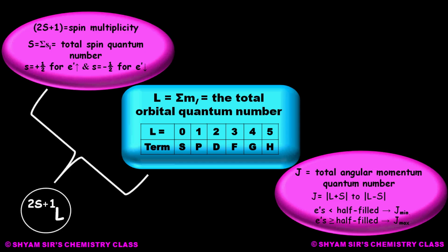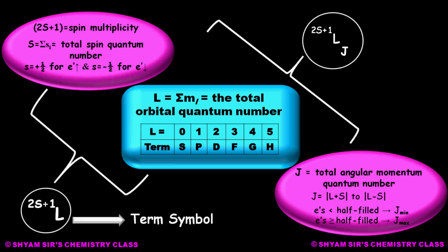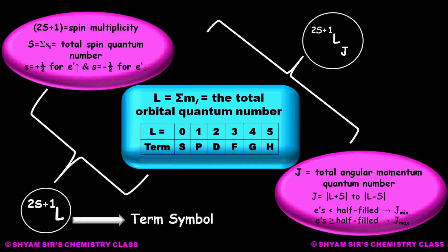The left superscript and middle symbol together — that is, 2S+1 L — is known simply as the atomic term symbol. Now in an exam, if they ask for the ground state term symbol, then you need to add J. That means all three together — 2S+1 L_J — is known as the ground state term symbol. This is the way we represent the ground state term symbol of an atom.